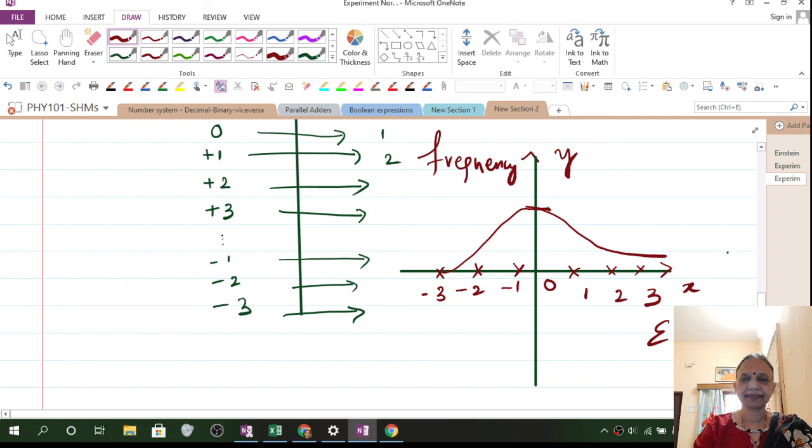This will be peaked here. This is the deviation. This is the deviation. This is known as Gaussian distribution.